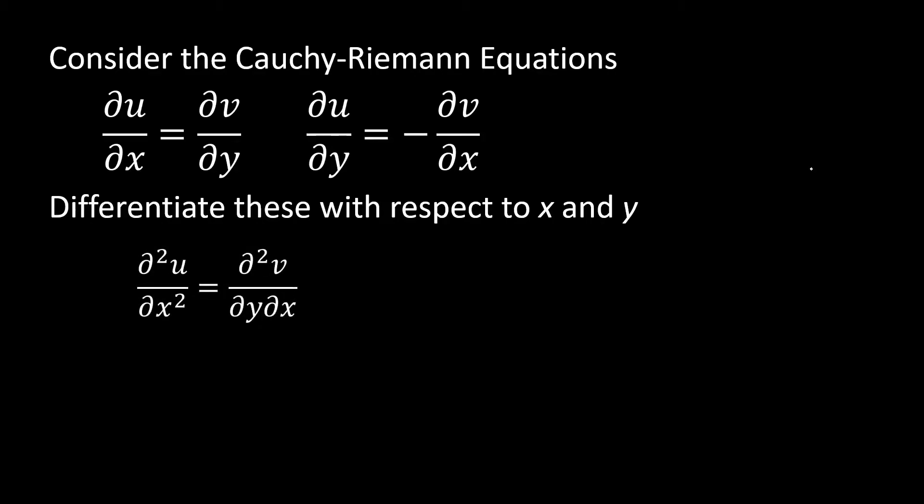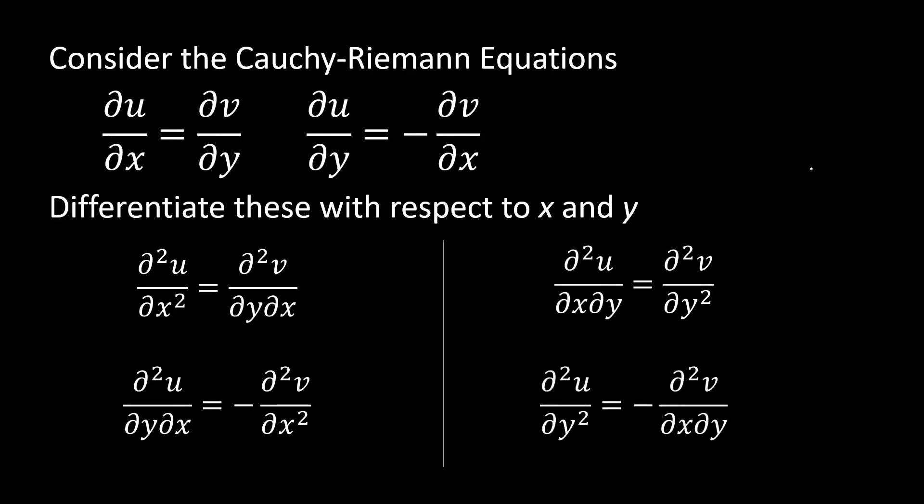So when we differentiate with respect to x, we'll get the following. And I want you to note these derivatives here where we're taking the second derivative first with respect to y and then x and then flip side on the other one. And then with respect to y, we get a similar sort of thing that emerges.